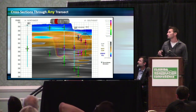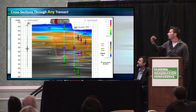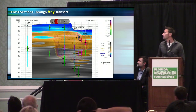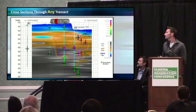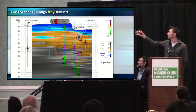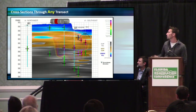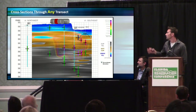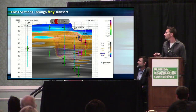We can also slice the 3D model and create transects through any transect we want very quickly. This really shows the geology well — urban fill in blue, silty clay in brown, and clay till in gray — and shows how that contamination migrated in the subsurface.